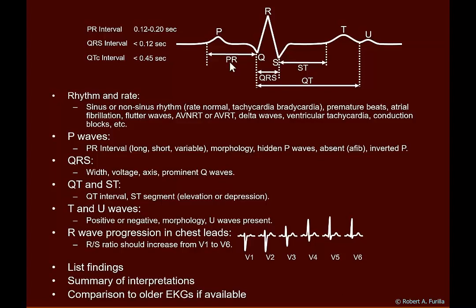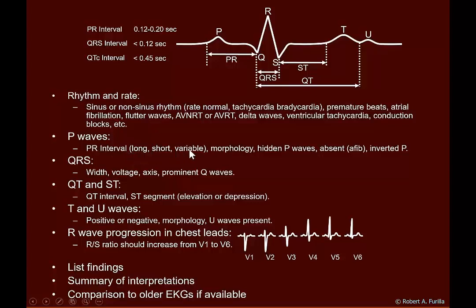The way I review it: I look at rhythm and rate first. I look for a sinus or non-sinus rhythm. Is the rate normal? Is it a tachycardia or bradycardia? Are there premature beats? Is there atrial fibrillation, flutter waves, re-entry loops, AVNRT or AVRT, delta waves, ventricular tachycardias, conduction blocks, etc. Then I march through the electrocardiogram from P all the way to U. Look at the P waves — is the interval long or short? Is it variable, indicating a second-degree AV nodal block? Look at the morphology. Are there hidden P waves? Are there absent P waves indicating atrial fibrillation? Are there inverted P waves — for example, an inverted P wave in chest lead V1 indicates left atrial enlargement.